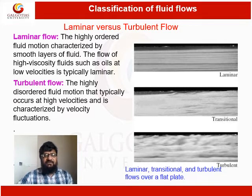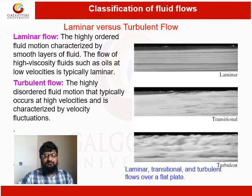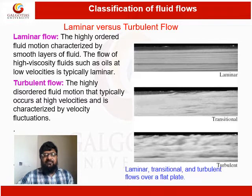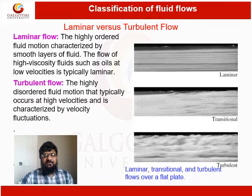Turbulent flow is very disordered fluid motion and typically occurs at high velocity, characterized by velocity fluctuations. In turbulent flow, the fluid particle velocity fluctuates and it is impossible to accurately predict their motion. Laminar and turbulent flow play a very important role in terms of heat transfer rate. Turbulent flow exhibits a higher rate of heat transfer compared to laminar flow.